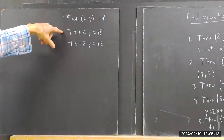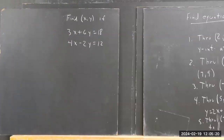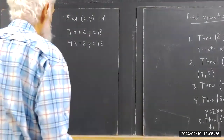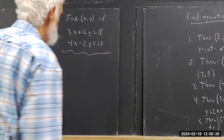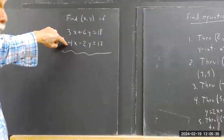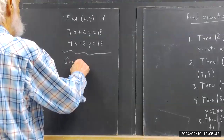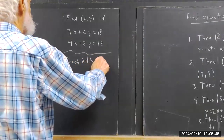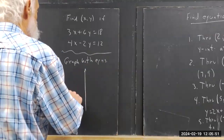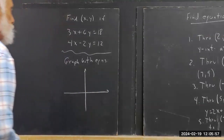We're going to find x and y. If 3x plus 6y equals 18, and 4x minus 2y equals 12. I can show you how to do this — the algorithm is fairly simple — but we want to think about what it means and start by simply sketching a graph on the same set of coordinate axes of both equations.